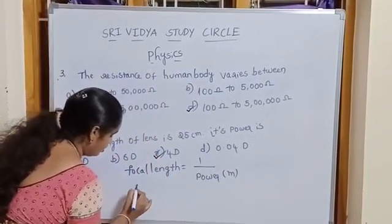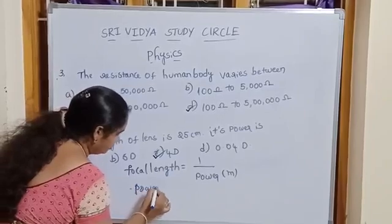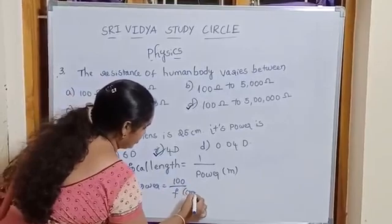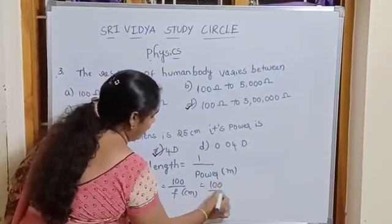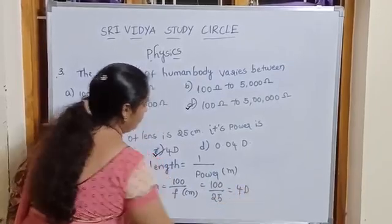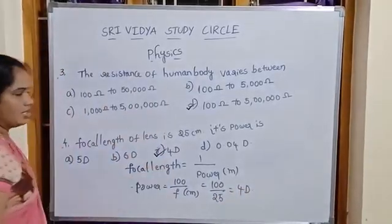And power is equal to 100 by focal length in centimeters. 100 by focal length is given 25, directly 100 by 25 we get 4 diopters. Option C.